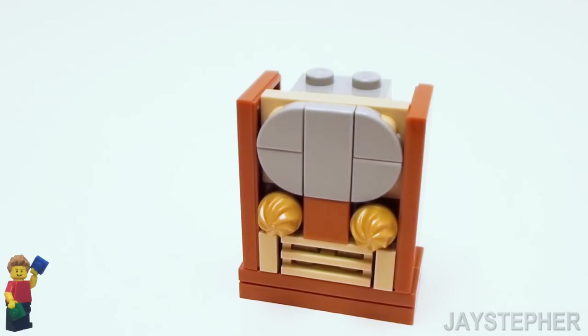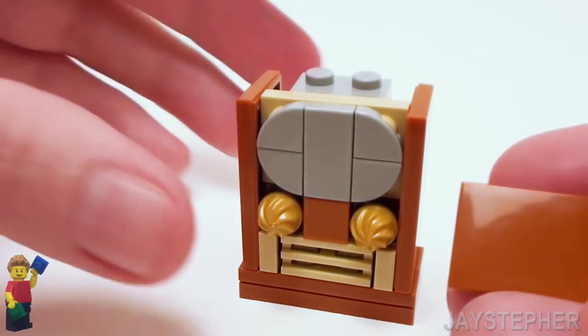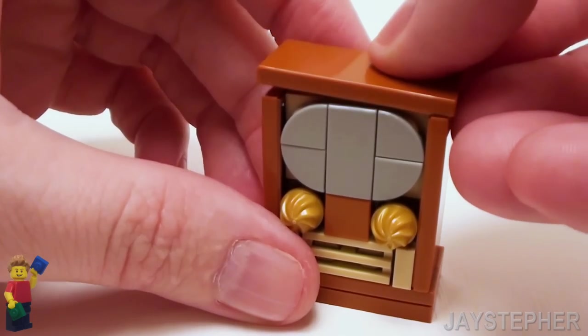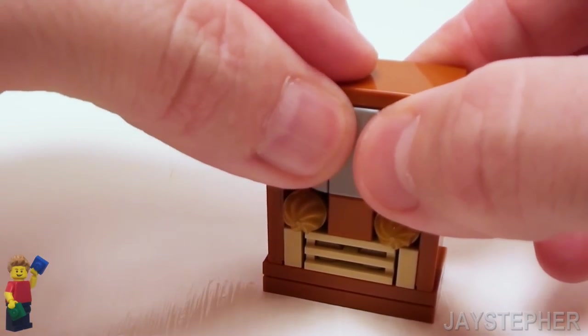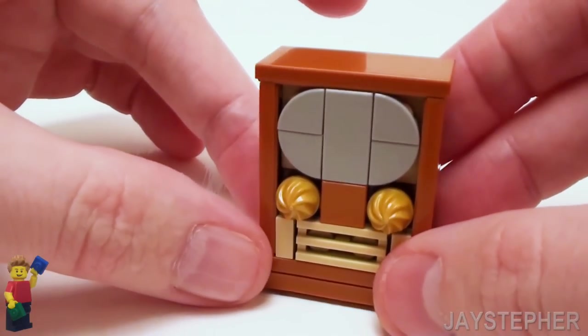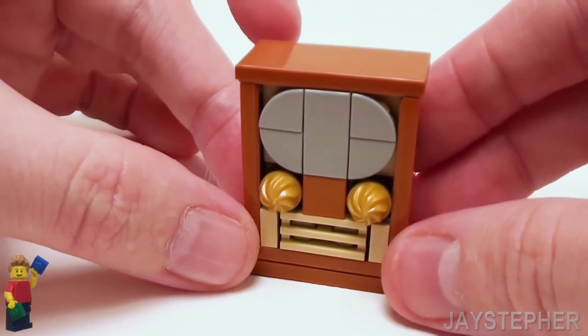And finally to finish off the top of the TV, let's crown it off with a 2 by 4 flat tile. Now there we have a nice adorable 1950s style television.